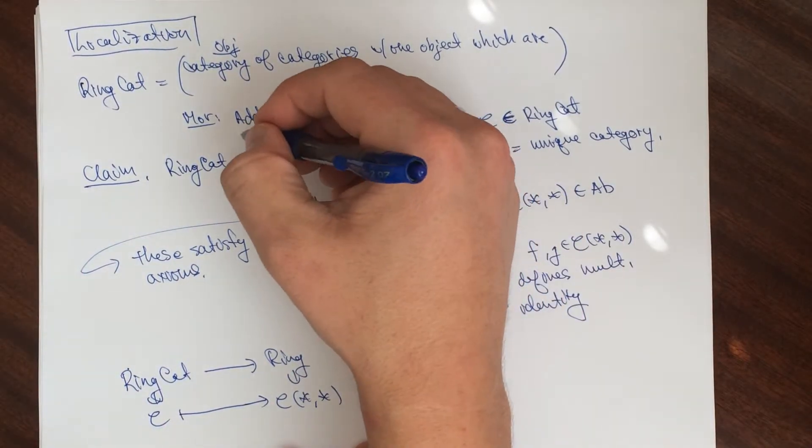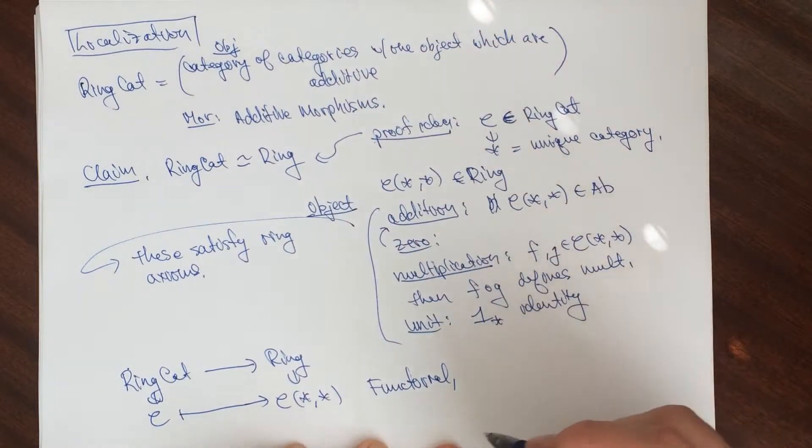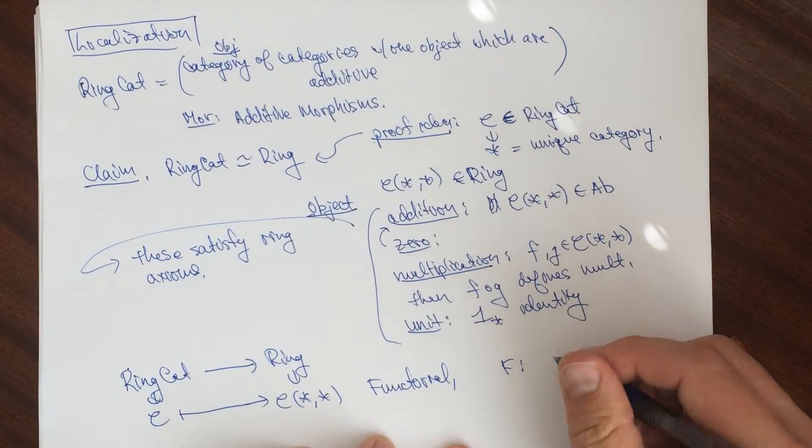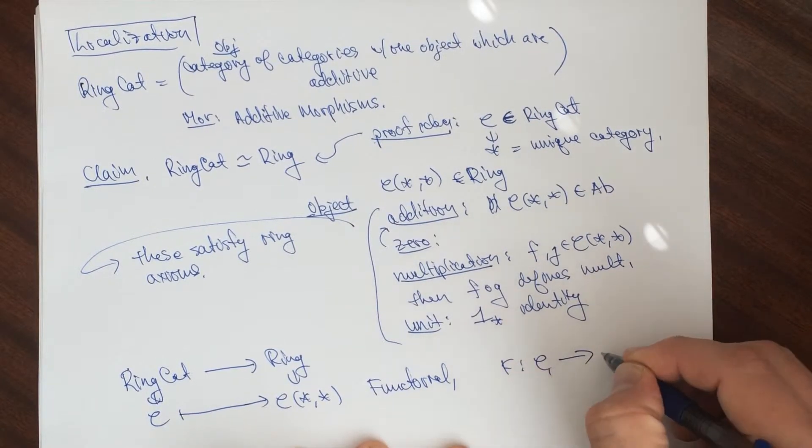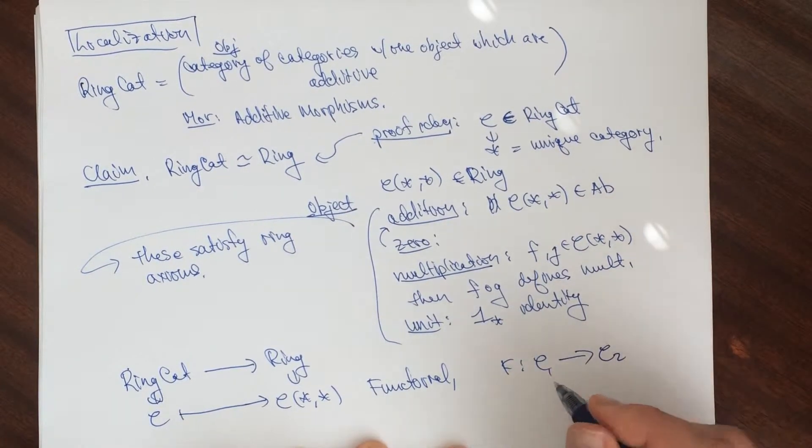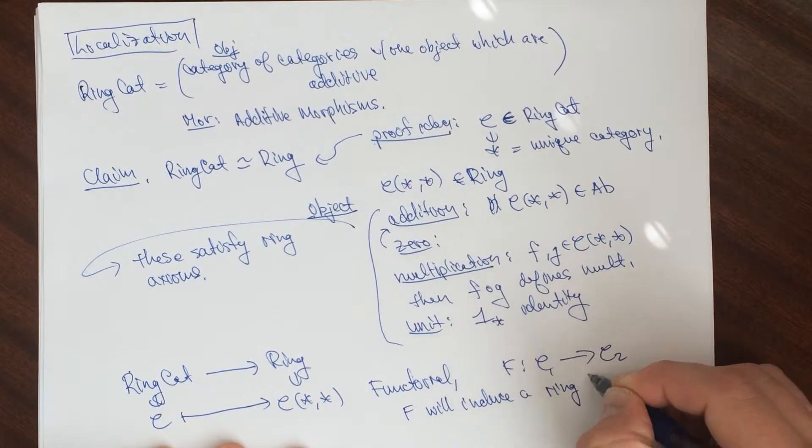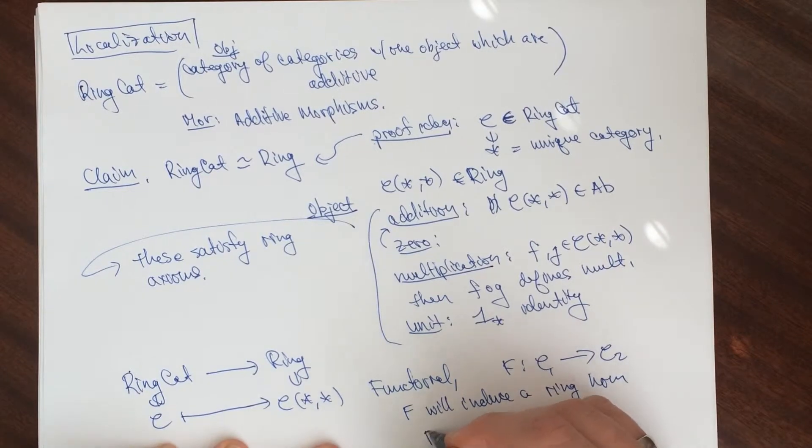Since we're using additive morphisms, this is going to say that F, suppose we have two guys. C1 to C2. Then this guy here. F will induce a ring homomorphism. Let's say F from, if you want to call it, we'll call it F again.